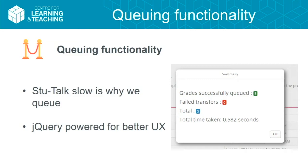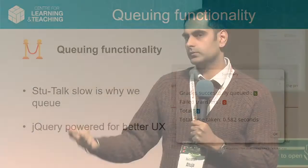That's the same reason we queue it in the ad hoc queue: you can have 15 grades all queued in about three seconds, and then the cron can do its job to send them to SAMIS or SITS. That's jQuery powered — we're just using simple Moodle dialogues to send that through. I'll pass it over to our colleague John.